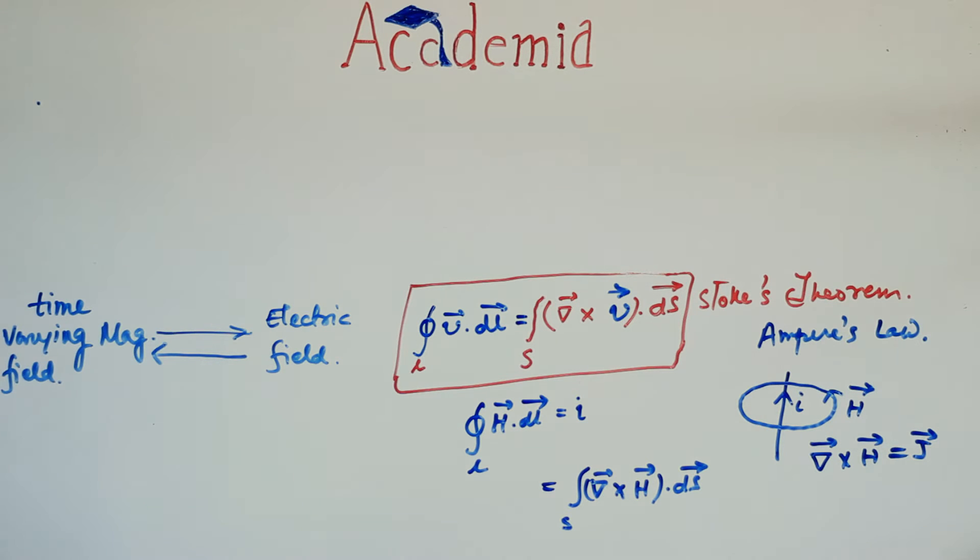That is, if time-varying magnetic field can produce electric field then time-varying electric field can also produce magnetic field. This theory of his led to the concept of displacement current which was validated later by experiments.